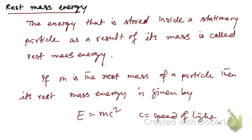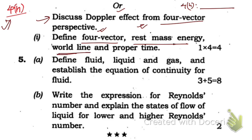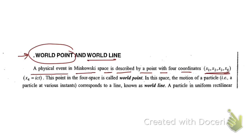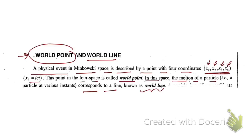Next, we need to define world line. A physical event in Minkowski space — which is four-dimensional space — is described by a point with four coordinates: x, y, z components, and x4 as the time component where x4 = ict. This point in four-space is called a world point, and the motion of a particle in this space corresponds to a line known as the world line.